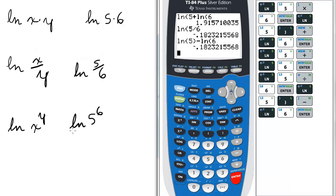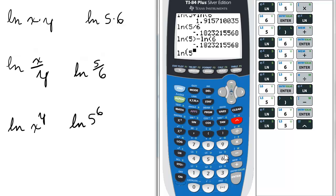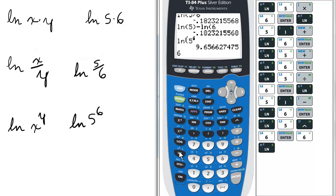ln of x to the y. So we're going to substitute ln of 5 raised to the 6. And you think that might be 6 ln of 5. So let's give that a shot. 6 ln of 5.